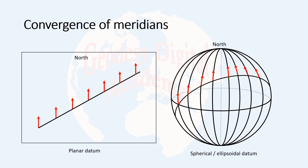Welcome. Today I am going to talk about convergence of meridians. Consider a plate of data which we normally use in survey, and we define a coordinate system so that one of its axes is pointing towards north. Consider a line on the surface of this planar data, and any point we select on this line can have a direction of north which is parallel to the y-axis. Therefore, all the directions of north that we select on this line are parallel. But this is not the case for a spherical or ellipsoidal datum.